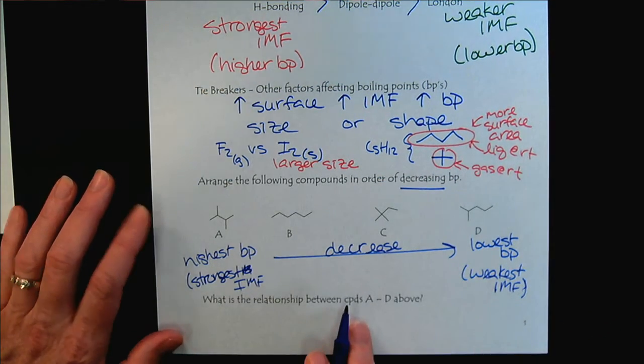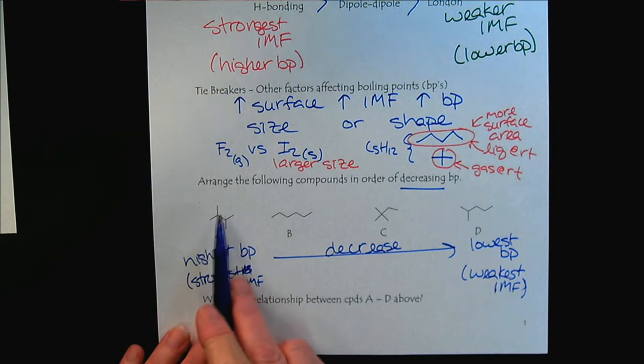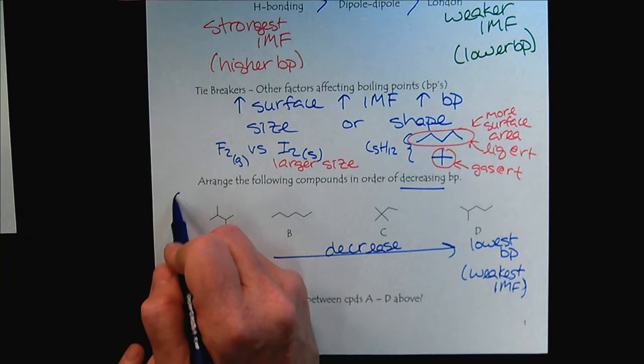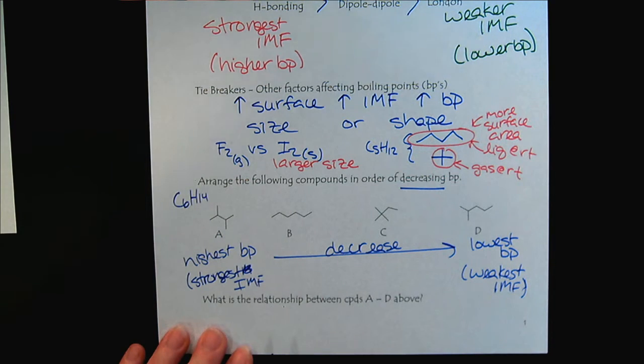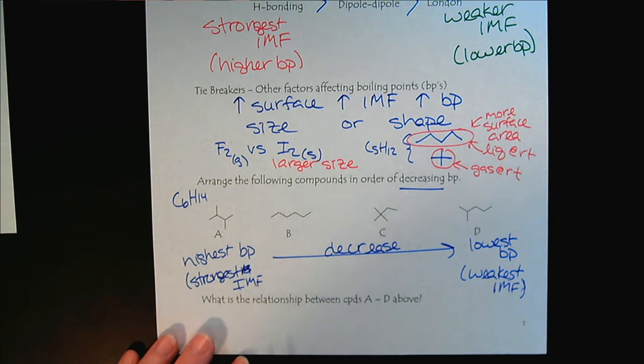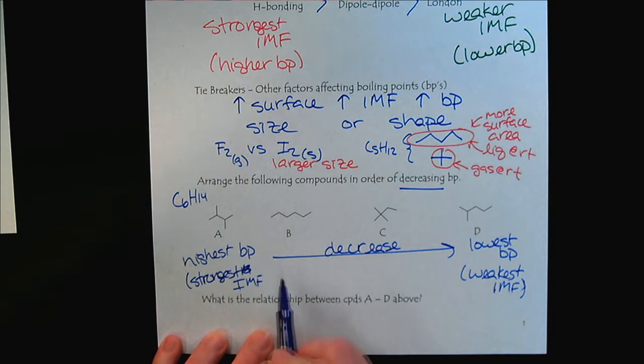Okay, so if we look here, we scan these, and we see that they all have the chemical formula C6H14. So they all have the same number of carbons. So we can recognize that compound B, as the straight chain, has the greatest amount of surface area.